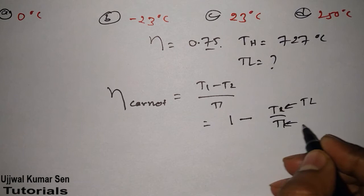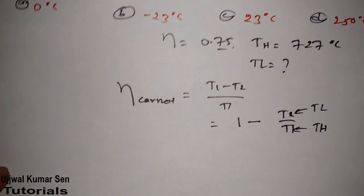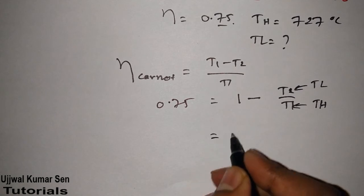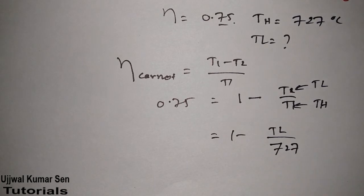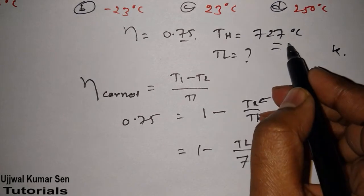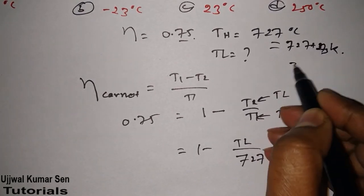In this question, efficiency of the Carnot cycle is 0.75. We have to find TL, given TH 727 degrees Celsius. But if you use this directly, you'll make a mistake. First you have to convert this into Kelvin: 727 plus 273 equals 1000 Kelvin.